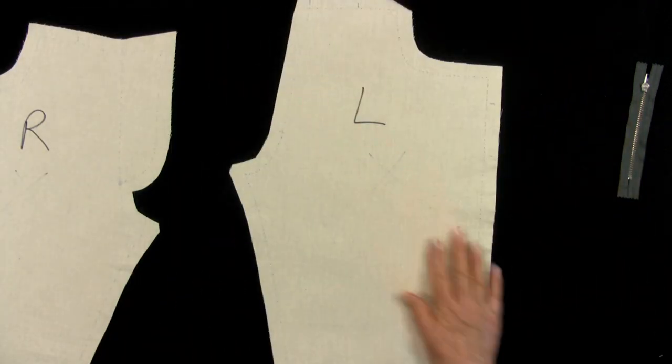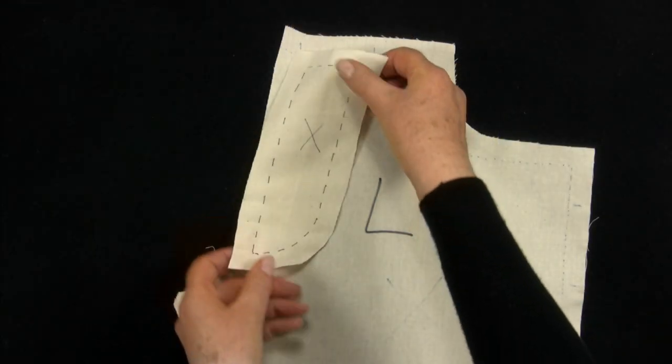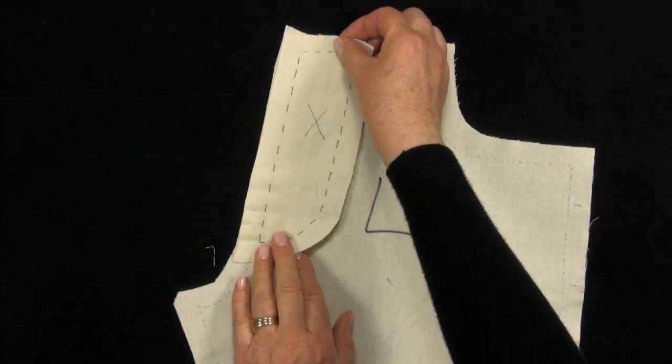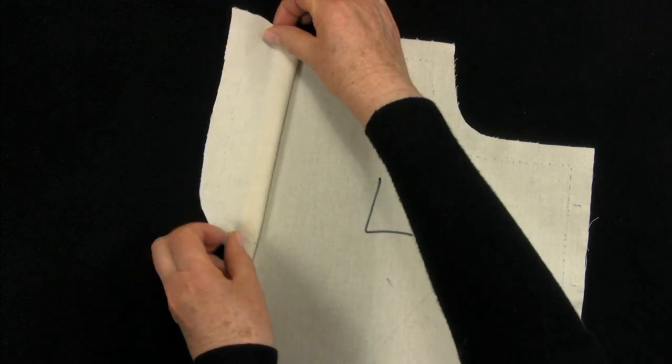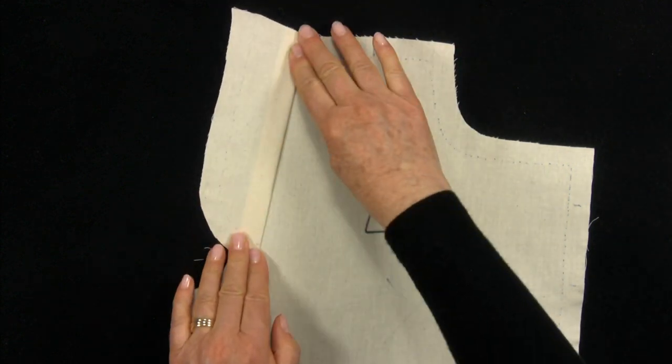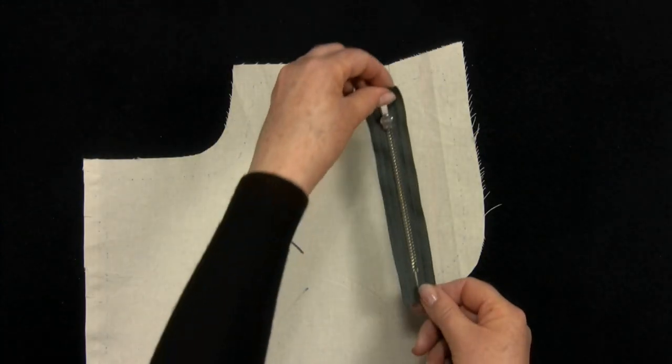Sew the separate fly extension to left front, right sides together. Press the seam towards the extension. You may think that rather defeats the object of cutting off the extension in the first place. This is done to give a firm finish to the centre front edge.